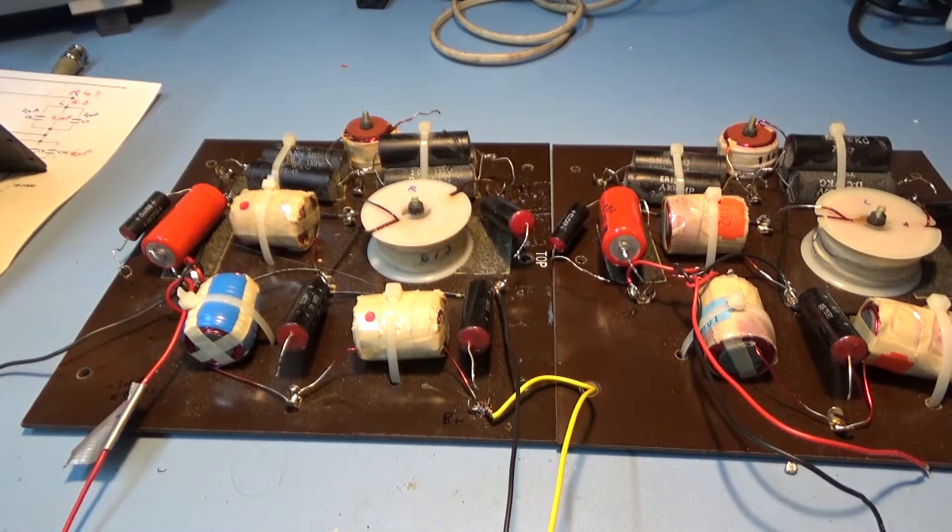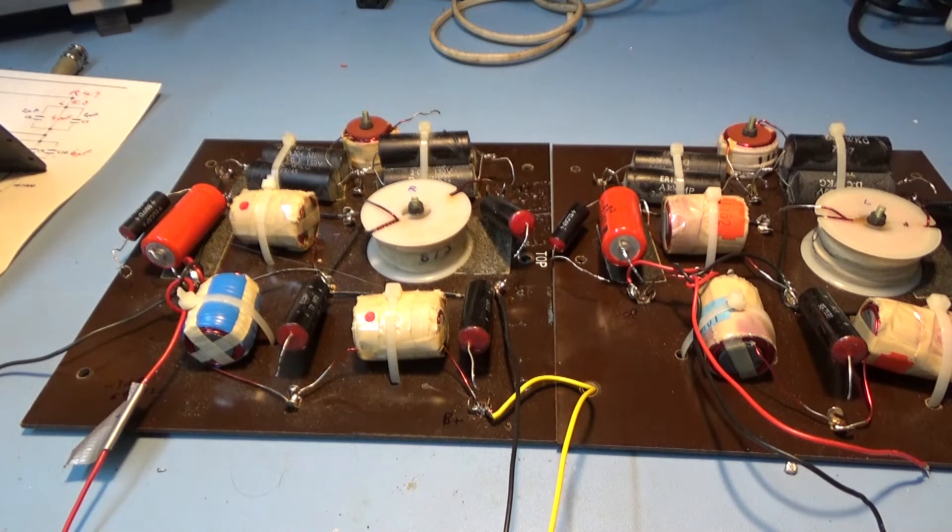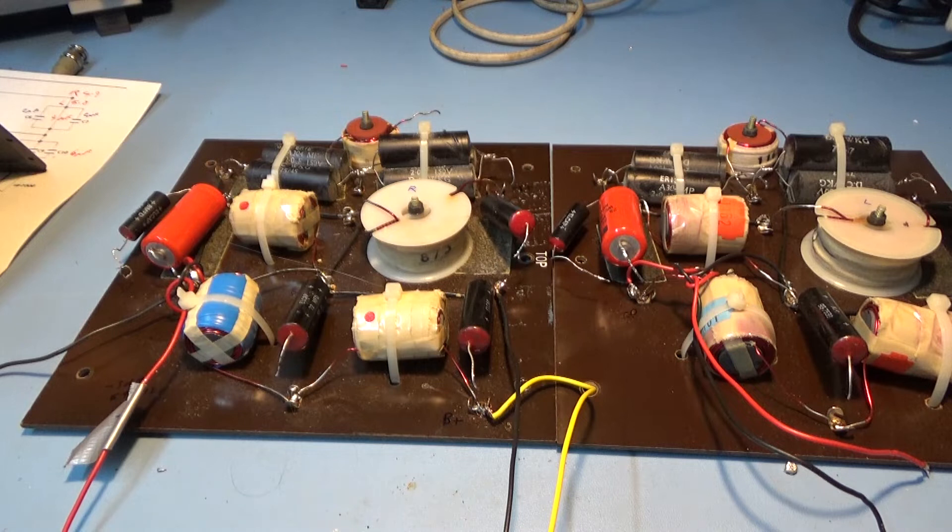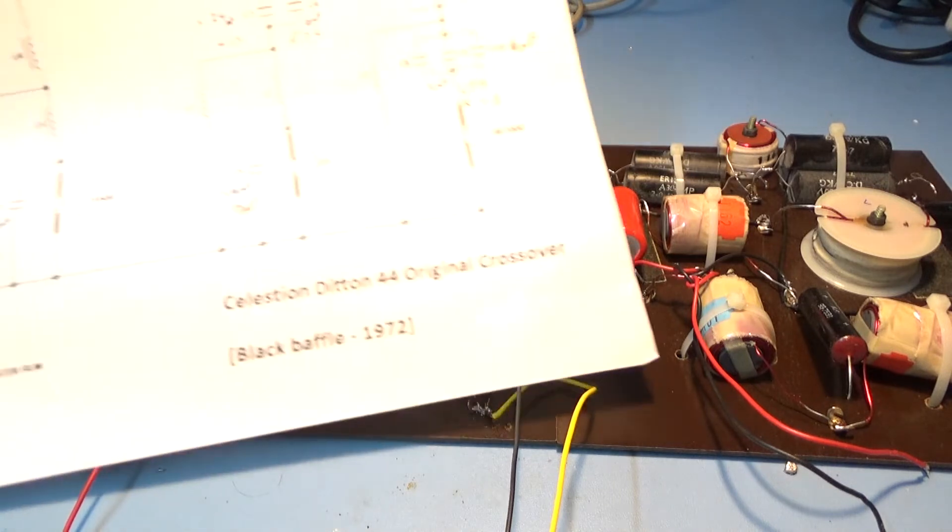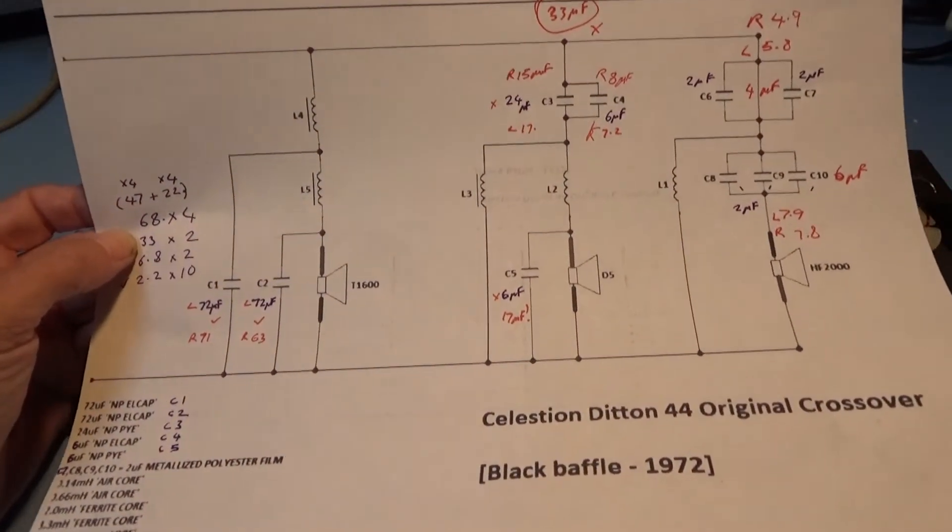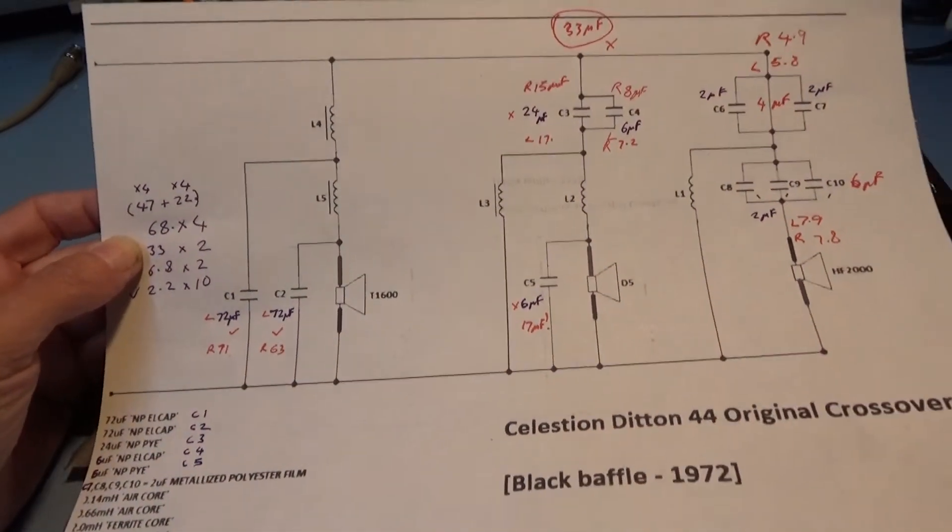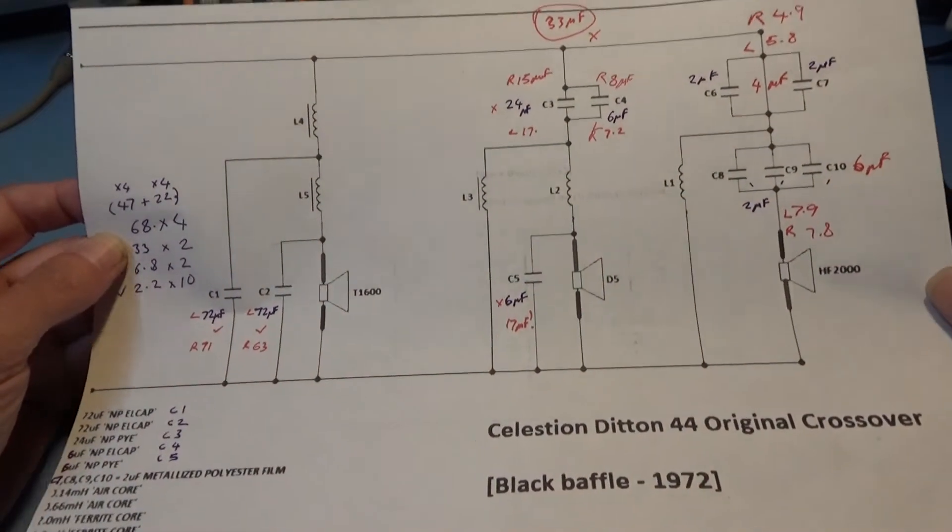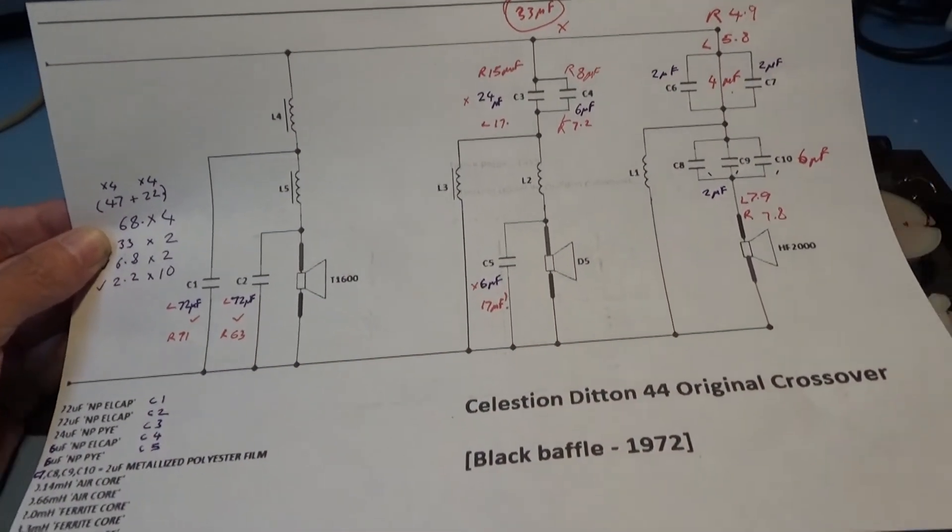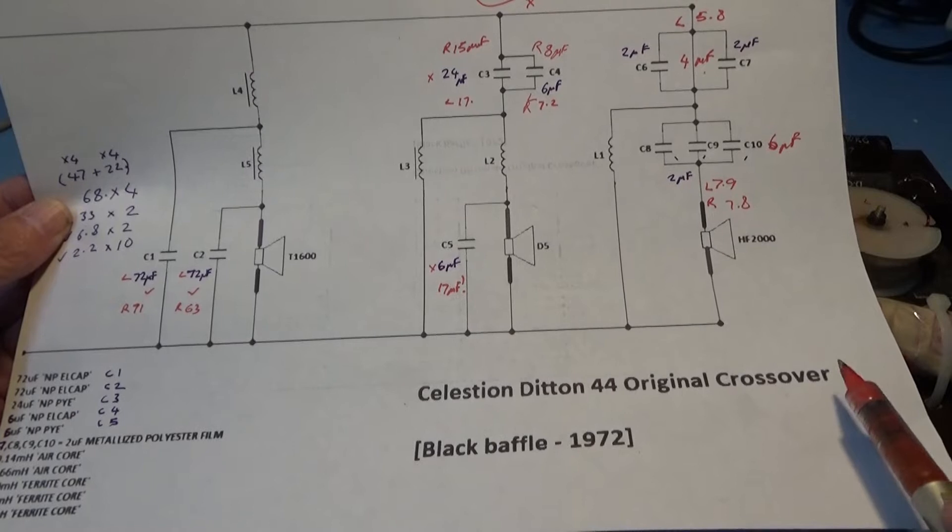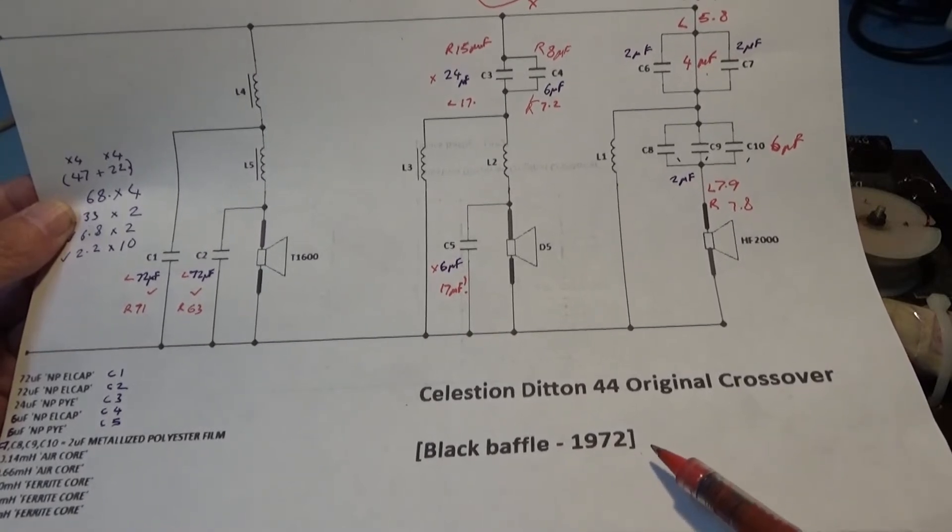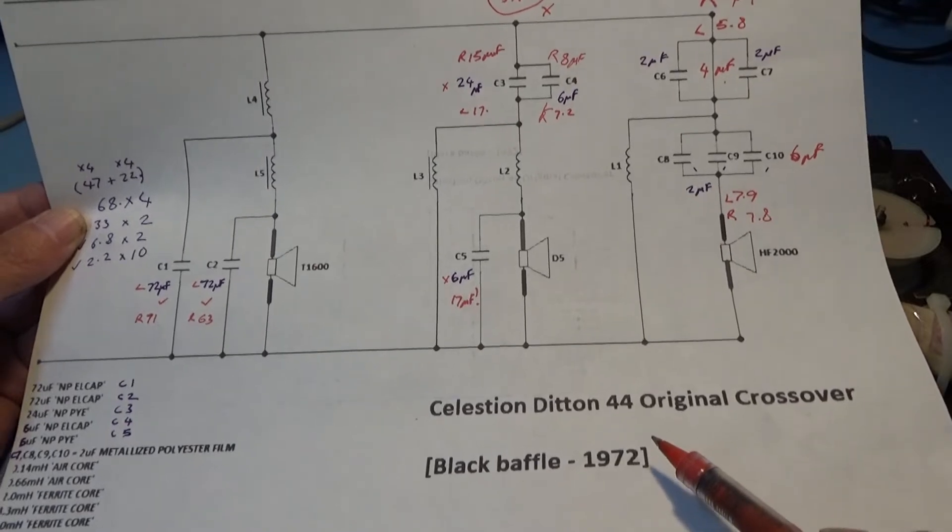So I've done some measurements in the workshop and they're quite interesting. Here they are, the two crossovers left and right on the bench. I thought it would be interesting to test the capacitors. I've already done this but I'm going to go through it again. With the modern internet it's so easy to get all the information you need. I found this schematic of the crossover section. This one says for Celestion Ditton 44 original crossover with black baffle.